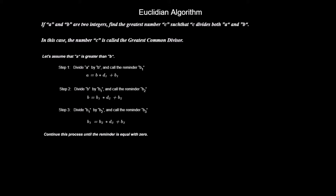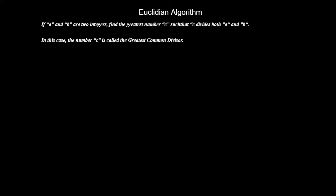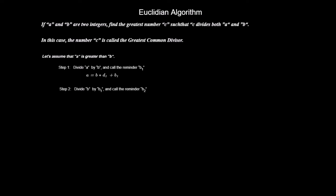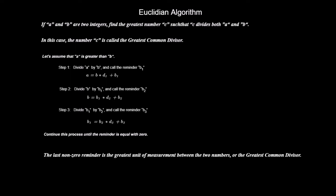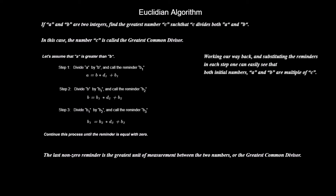The Euclidean algorithm solves this problem using a series of similar steps. Let's assume that A is greater than B. Step 1: divide A by B and call the remainder B1. Step 2: divide B by B1 and call the remainder B2. Continue this process until the remainder is equal with zero. The last non-zero remainder is the greatest unit of measurement between the two numbers, or the greatest common divisor. Let's call this number C. Working our way back and substituting the remainders in each step, one can easily see that both initial numbers, A and B, are multiples of C.